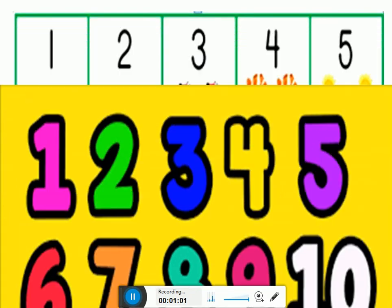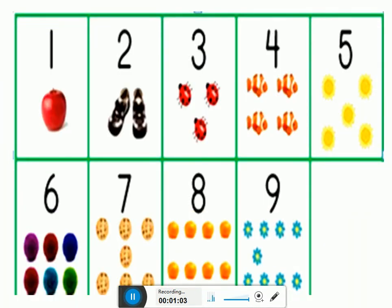Now let's see what else we are going to learn in maths. Wow. Here you can see here are the numbers and the quantity of the number. We will count the number and then we will count the quantity of the number. Now here you can see here is number 1 and 1 apple. 1, 1 apple.